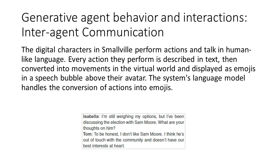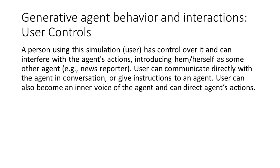Every action they perform is described in text, then converted into movements in the virtual world, and displayed as emojis in a speech bubble above their avatar. The system's language model handles the conversion of actions into emojis. A user has control over the simulation and can interfere with the agent's actions, introducing themselves as some other agent — for example, a news reporter. The user can communicate directly with the agent in conversation, give instructions, or become an inner voice of the agent and direct their actions.